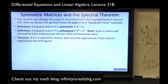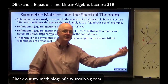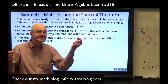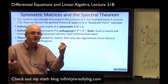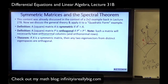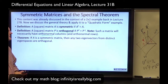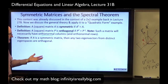Theorem: if A is a symmetric matrix, then any two eigenvectors from distinct eigenspaces are orthogonal. Given eigenvectors from two distinct eigenspaces, their dot product is zero. The Spectral Theorem for symmetric matrices broadens this. This theorem for real symmetric matrices is the easiest spectral theorem — there are others.